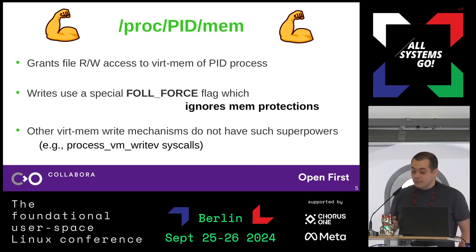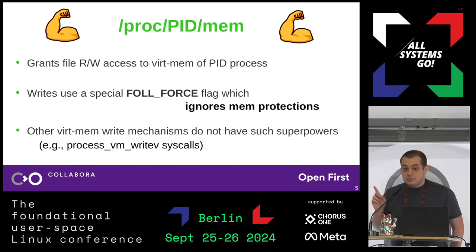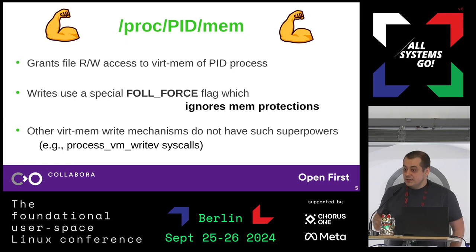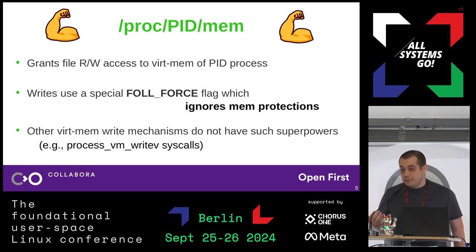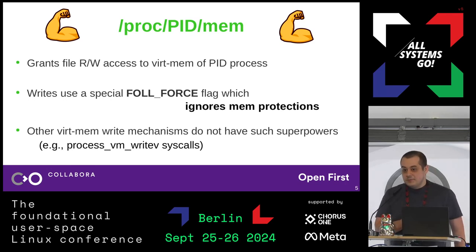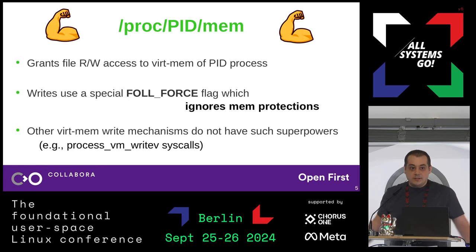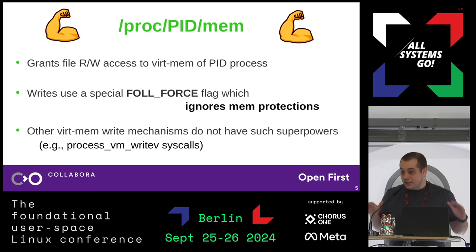The Linux kernel enforces memory protections and will not allow you to write to executable pages — but with /proc/pid/mem you can do that. You can overwrite the executable pages of another process and execute your own code there. This is only a problem with /proc/pid/mem.